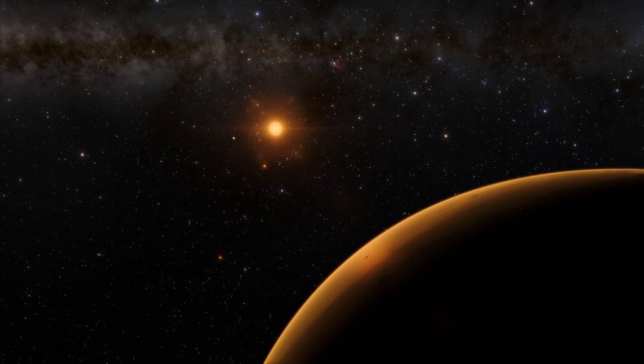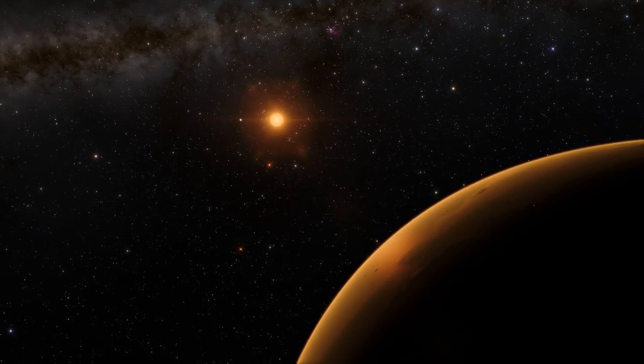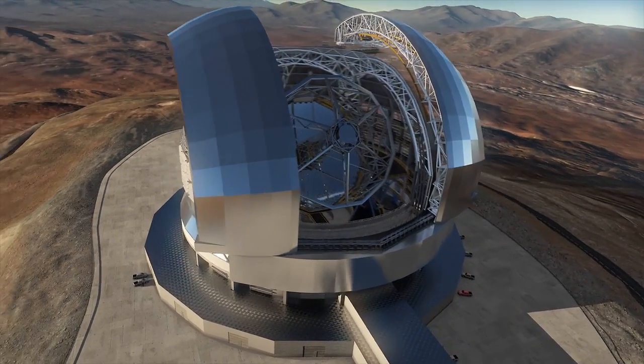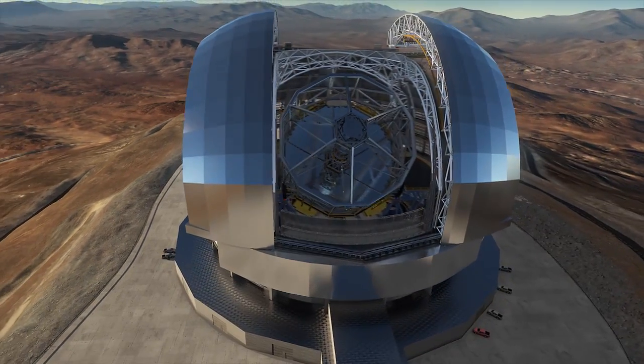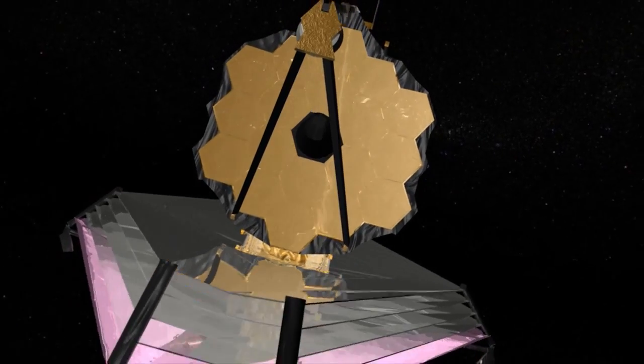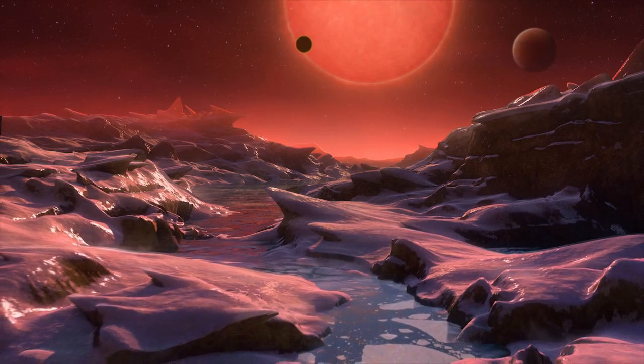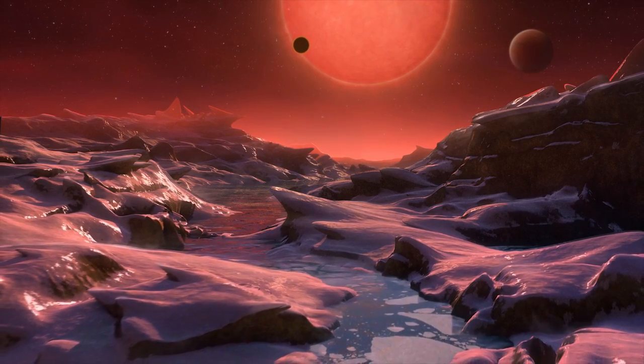This new discovery makes the system a top target for future investigation. With the next generation of telescopes such as ESO's European Extremely Large Telescope and the NASA-ESA James Webb Space Telescope, astronomers could observe signs of water in the atmospheres of these planets.